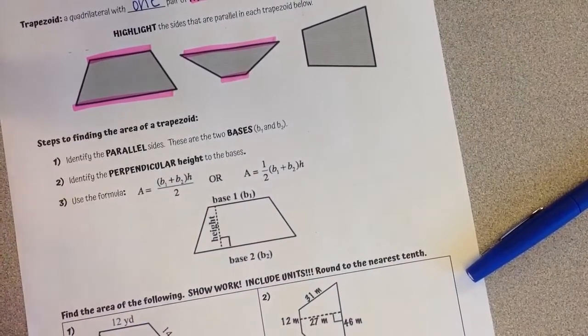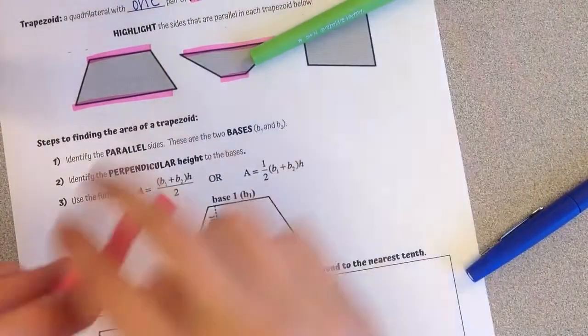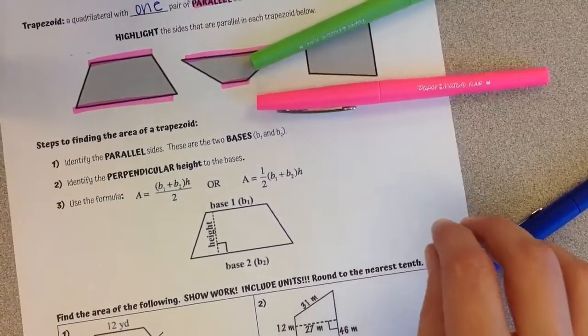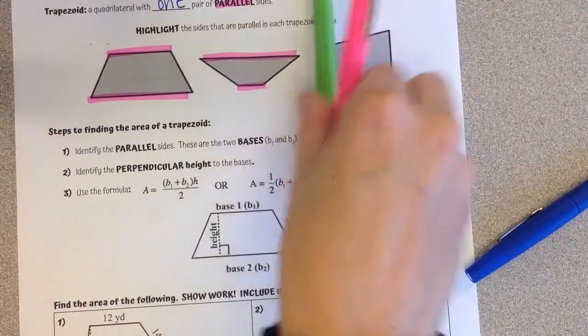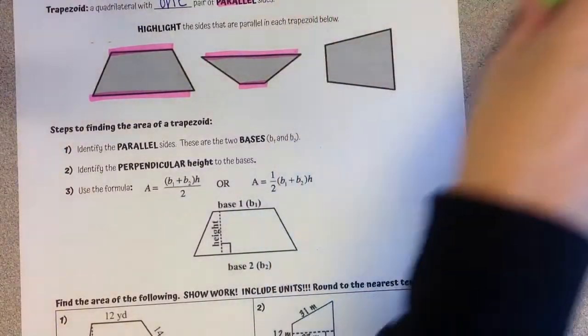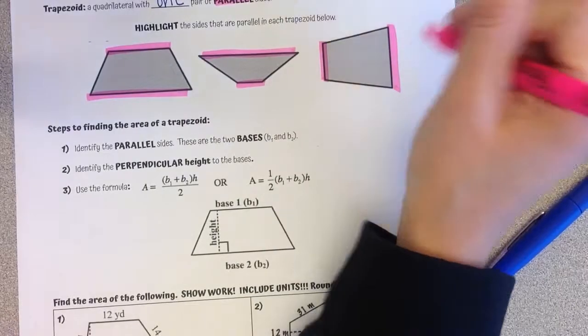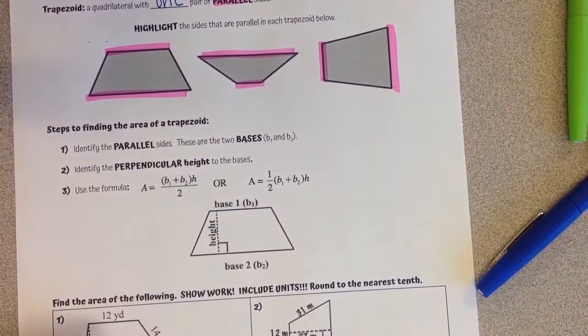And then in the third one, if I look at these two sides right here, if I kept those lines going, they would eventually intersect, versus these two lines right here never would. So now for this image, it's on the right and left that we have that one set of parallel sides.